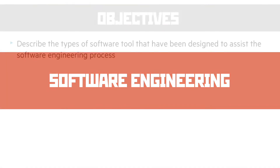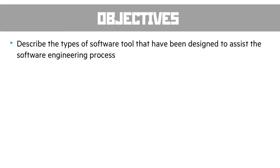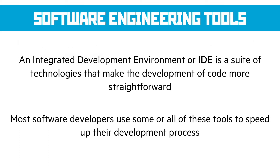Software engineering. The first objective here is to describe the types of software tools that have been designed to assist the software engineering process. Now an IDE, or an integrated development environment, is a suite of technologies that make the development of code more straightforward.